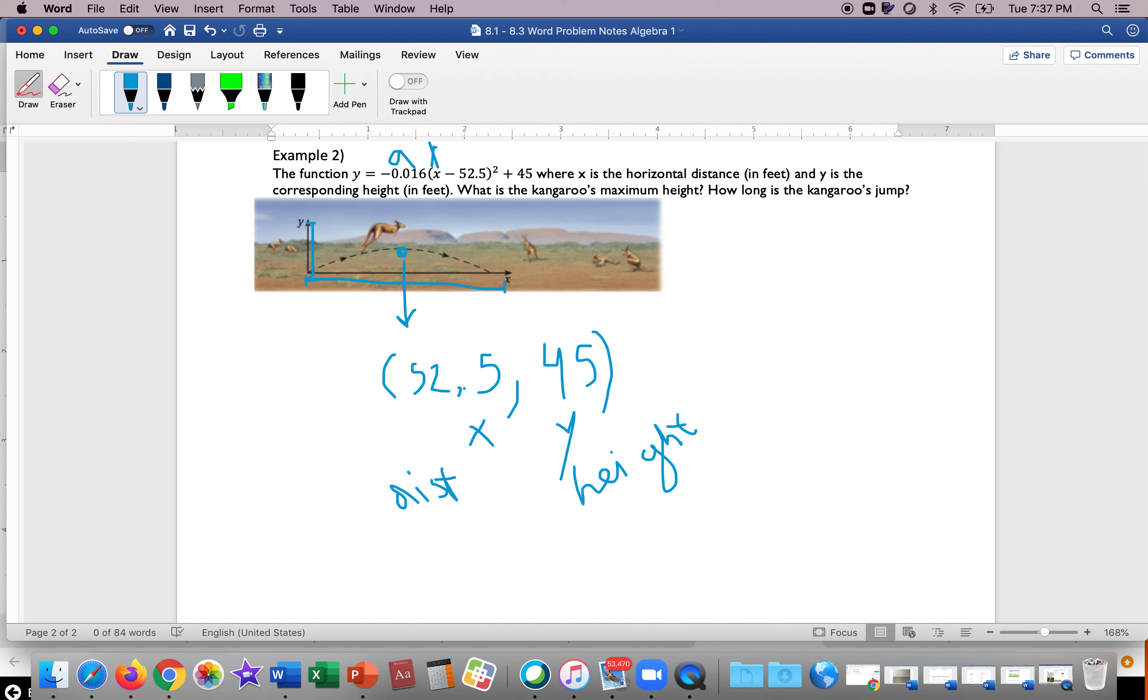Okay, so when it says what is the kangaroo's maximum height, max and mins you want to go look at your vertex. A max and min is always the y-coordinate of your vertex. We call this a max because it's the upside-down parabola, and the vertex is the highest point. So our max value is 45, and then that also represents the height—the max height that the kangaroo jumped.